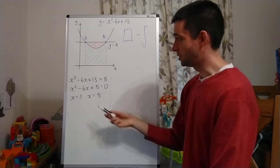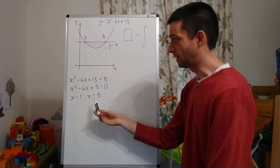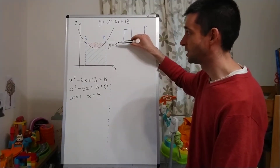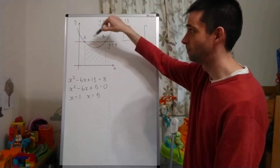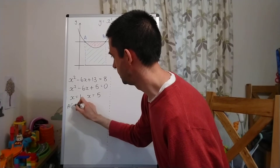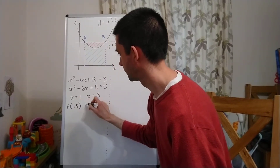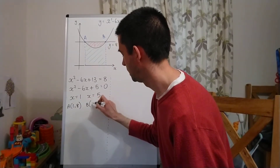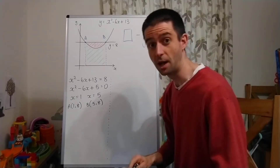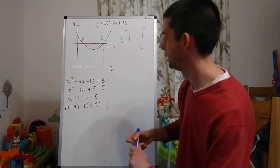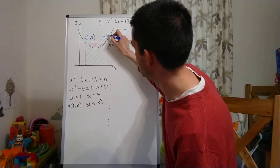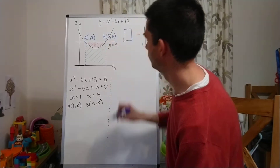Normally you'd have to substitute these x values back into one of the two equations to find the value of y. But because y equals 8, I know the y coordinate for both of these is going to be 8. So point A is (1, 8) and point B is (5, 8). I can label that onto my original diagram as well — that's (1, 8) and that there is (5, 8).